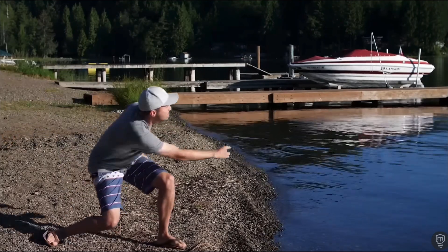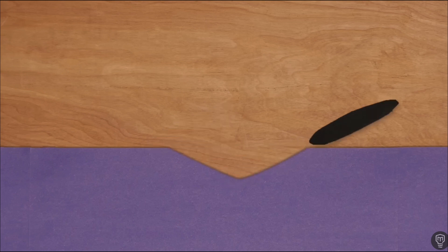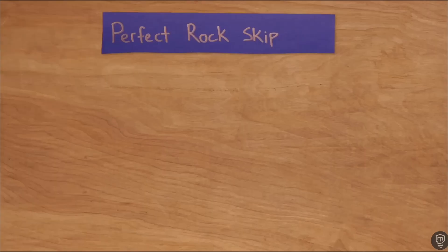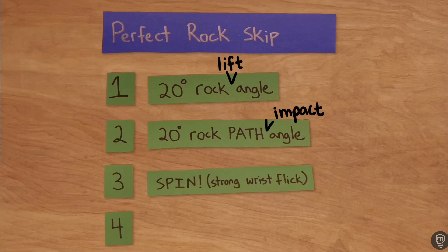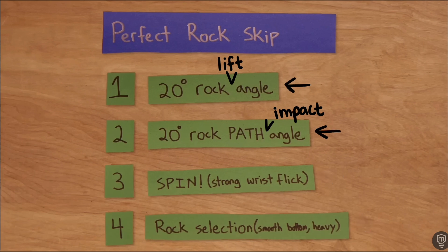Mark Rober has already done a great video on figuring the optimal values that make the ideal rock skipping throw. He summarized his four suggestions for rock skippers as: 1. Throw the rock with a lift angle of 20 degrees. 2. Throw so the attack angle of the rock hitting the water is 20 degrees. 3. Spin the rock as much as possible. 4. Choose a rock that is flat on the bottom and as heavy as possible for you to still get to your max arm speed. Numbers 3 and 4 are straightforward, but 1 and 2 are not.